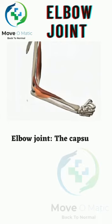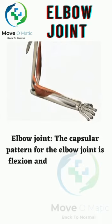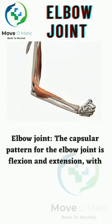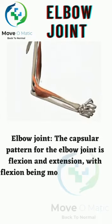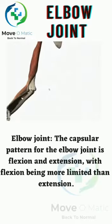Elbow joint: The capsular pattern for the elbow joint is flexion and extension, with flexion being more limited than extension.